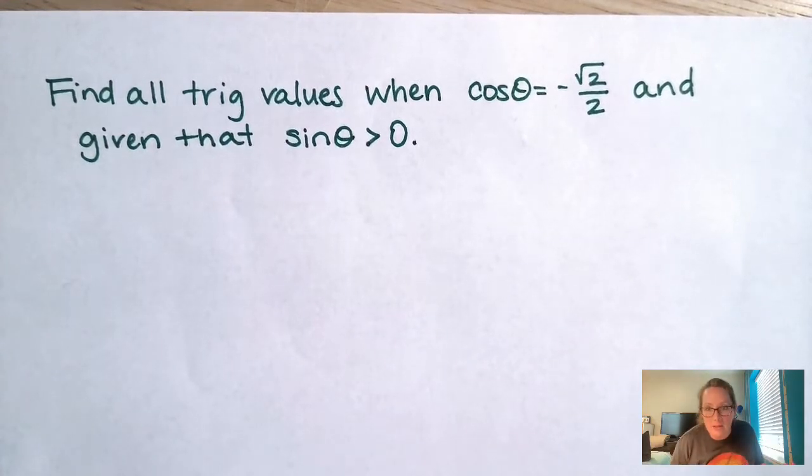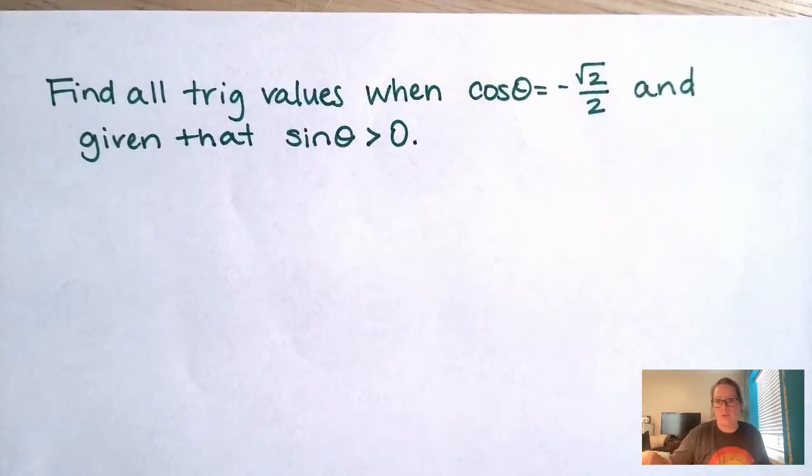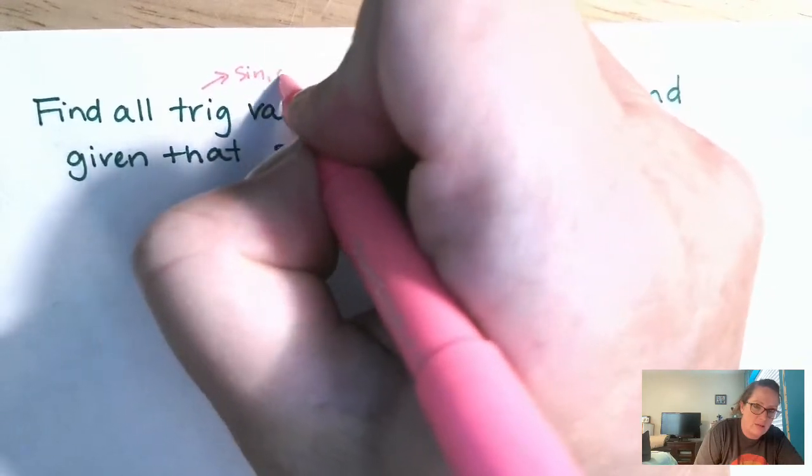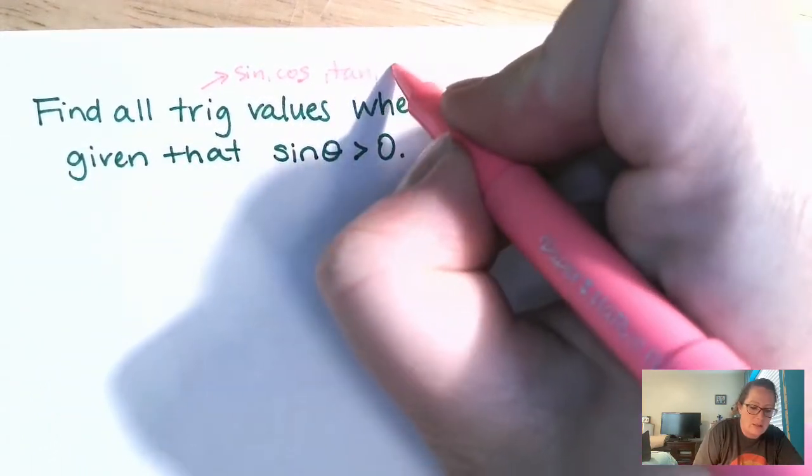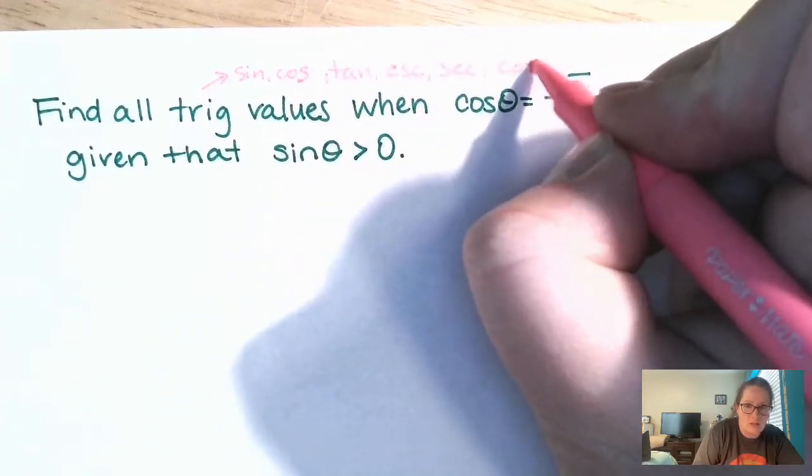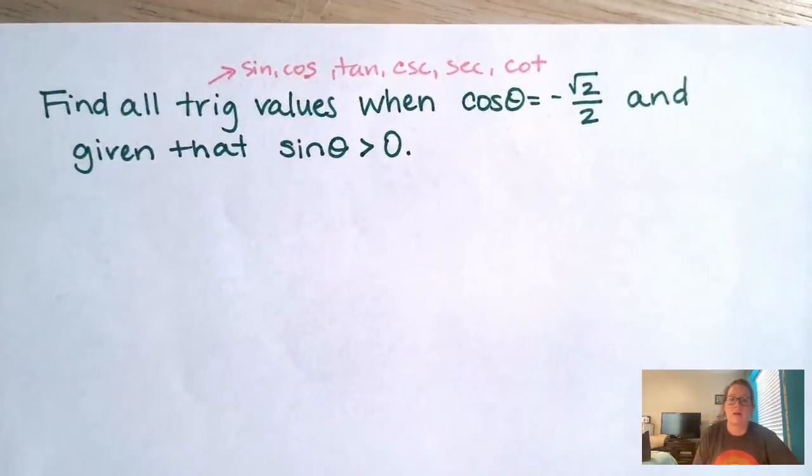Holy cow, does this look scary, but it's not. So let's just take it piece by piece. Okay, so we want to find all six trig values, which means we're going to find sine, cosine, tan, cosecant, secant, cotangent. Okay, just a fancy way of saying find all of them. We already found one, so that's exciting.